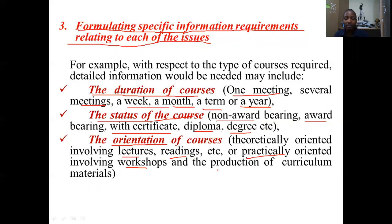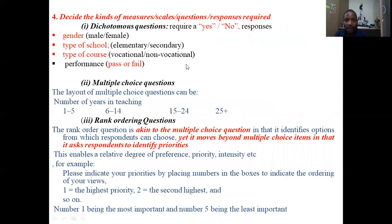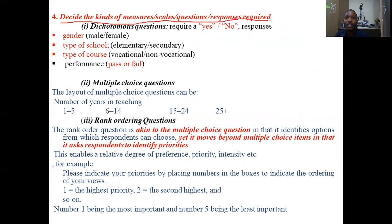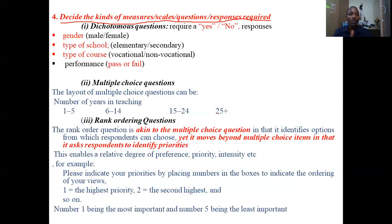Most young researchers skip steps one, two, and three and jump directly to step number four, which is the big mistake. Step number four comes only after you have gone through the first three steps. This is the point where you decide the kind of questions to use for each specified parameter identified in step three. There are several types of questions I will show you that may be applicable in any questionnaire.